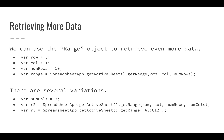We can also use the range object to retrieve more data. Earlier we showed how to get a single cell, but we can actually get multiple cells. Using SpreadsheetApp.getActiveSheet().getRange() and passing in a row number, column number, and a number of rows will give us all the data associated with those rows. We can also specify the number of rows and columns to retrieve.